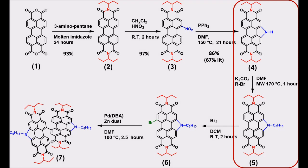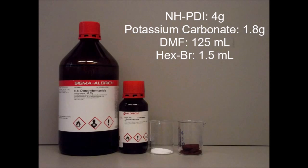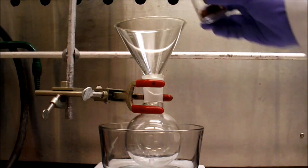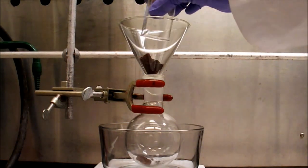In our paper we give two methods for this reaction, one using conventional heating and one in a microwave. Due to the large scale of this reaction we will be doing it using conventional heating. For this reaction you will need NH-PDI, which we made in a previous video, potassium carbonate, 1-bromohexane, dimethylformamide, as well as methanol and dichloromethane for washing.